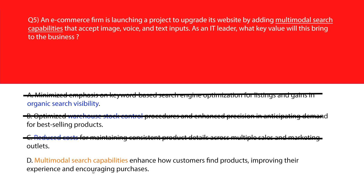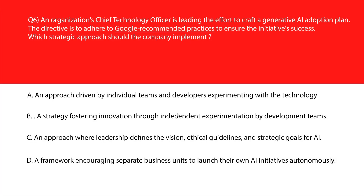Option D: multi-modal search capabilities enhance how customers find products, improving their experience and encouraging purchases. Multi-modal search is fundamentally designed to enhance user interaction with the catalog, simplifying product discovery which drives engagement and sales. Option D is the right answer.